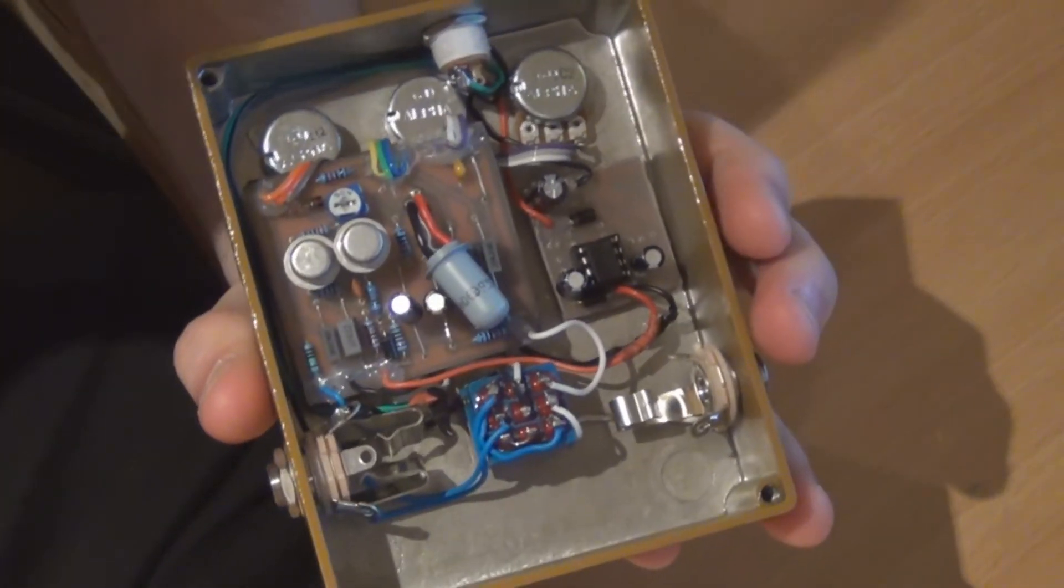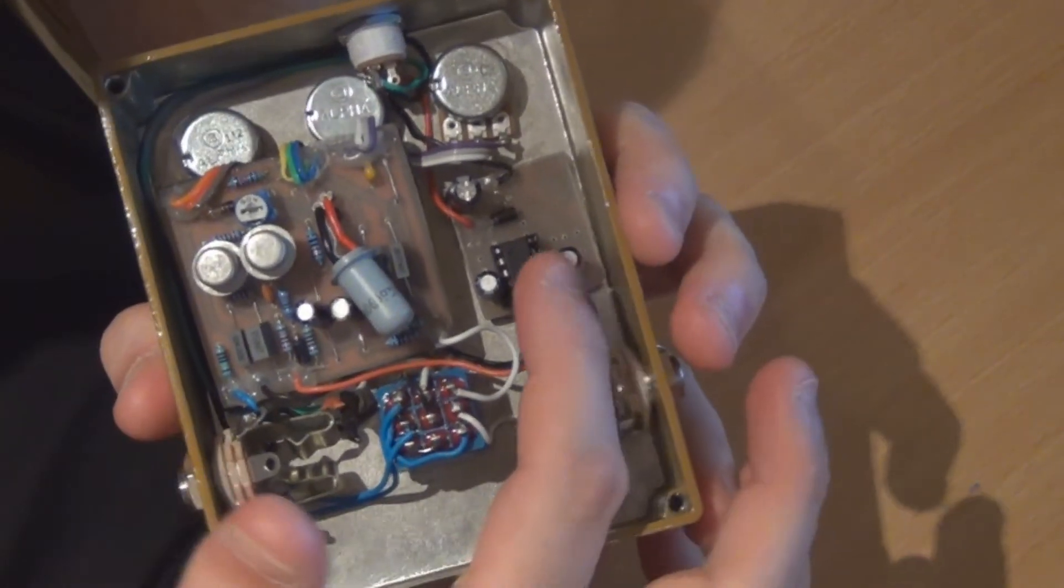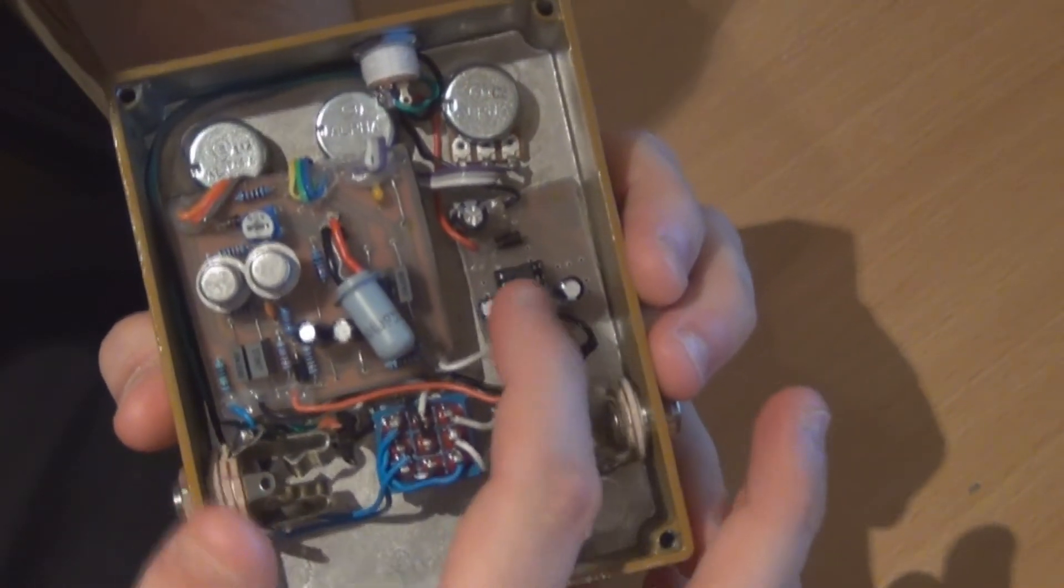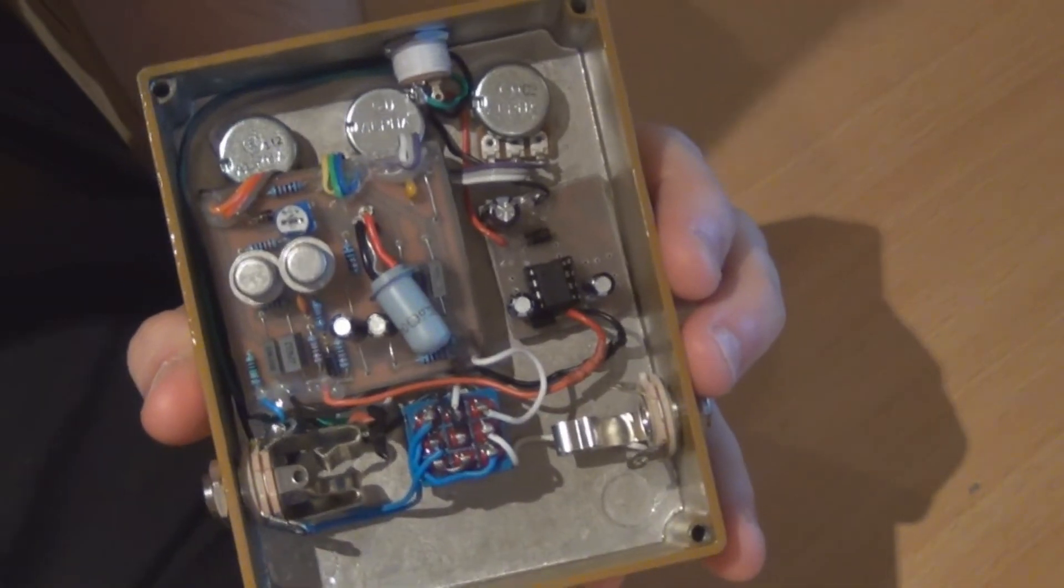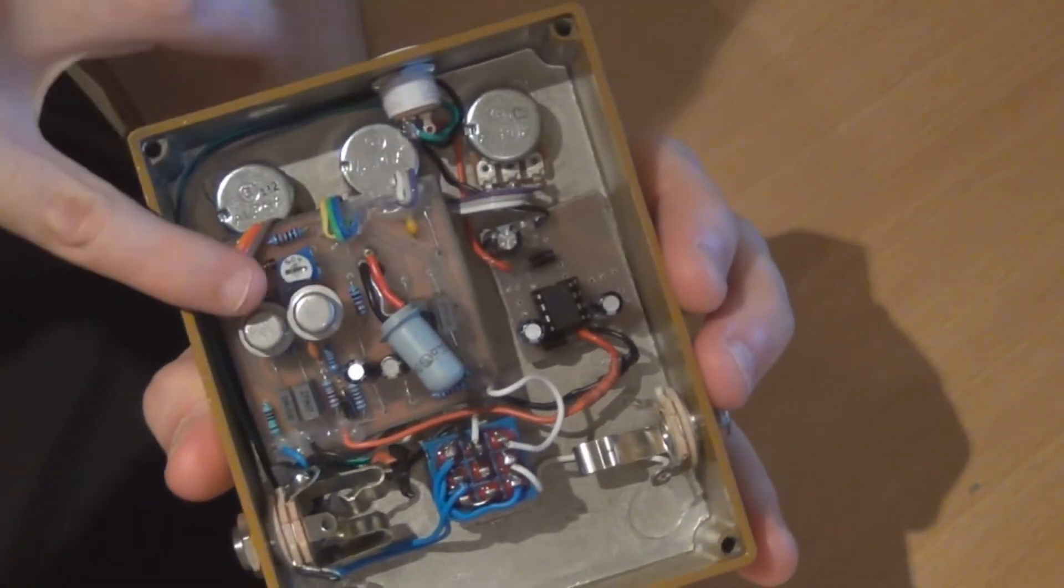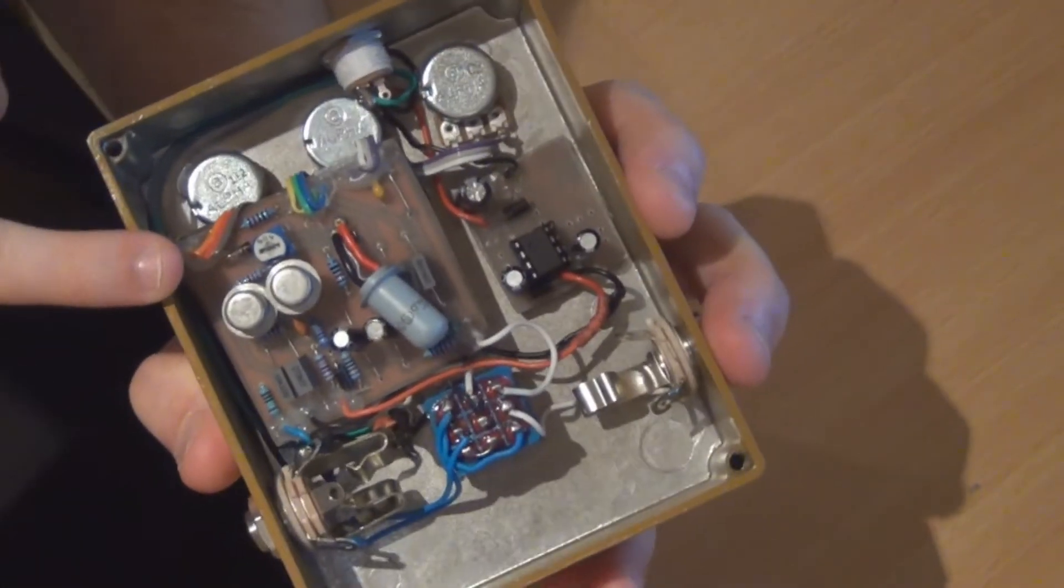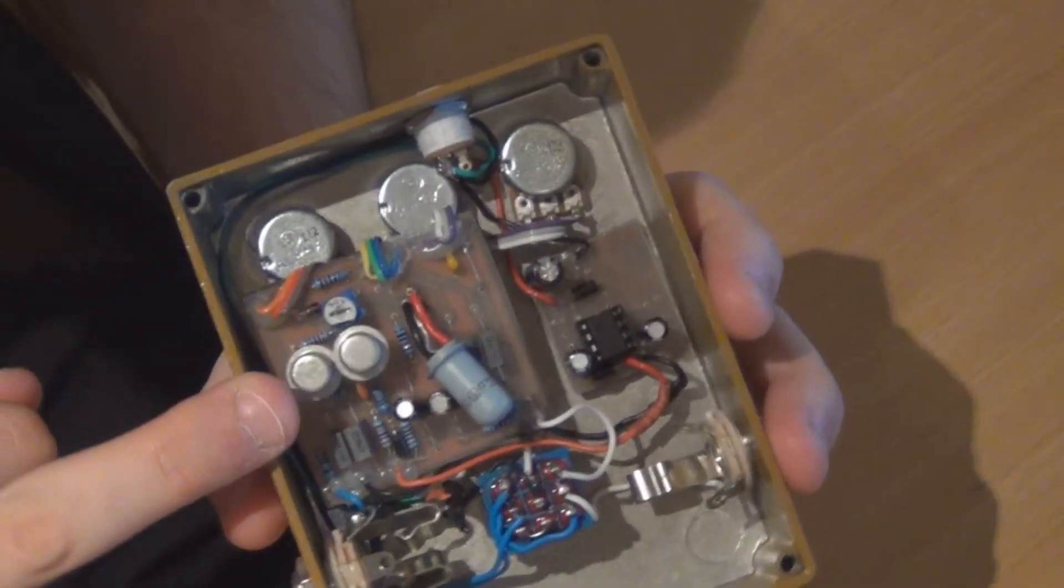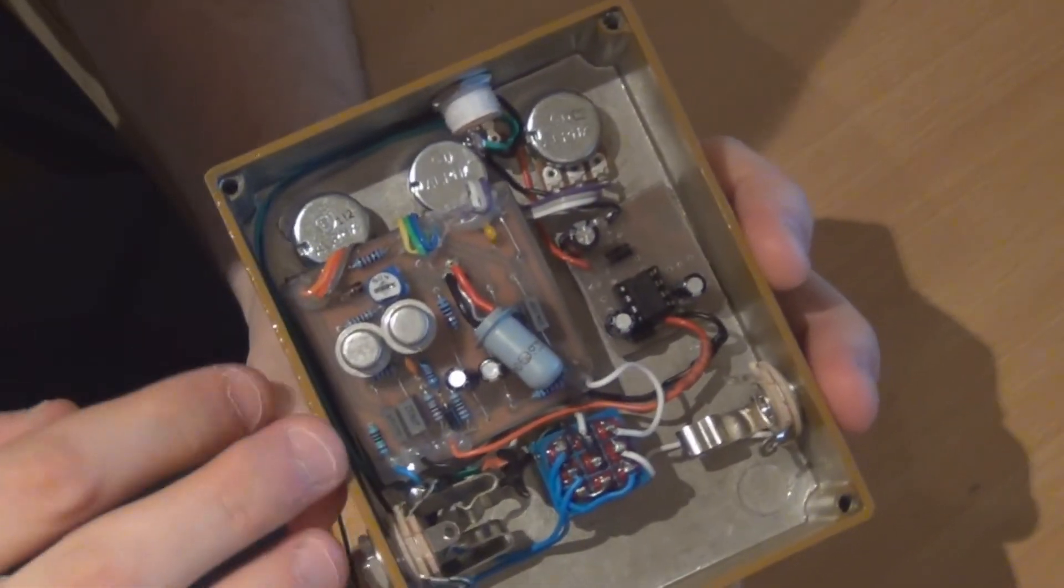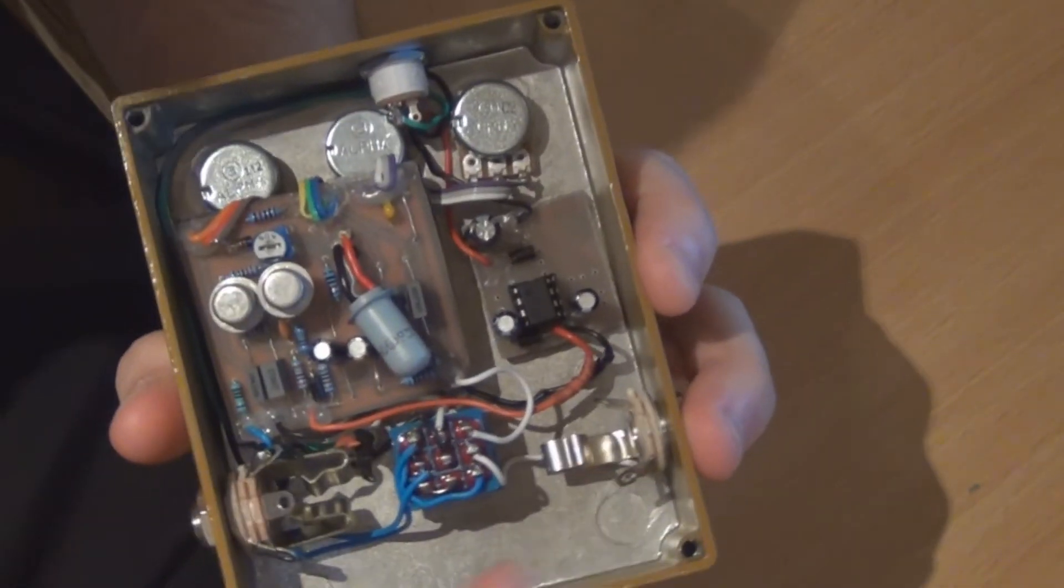There's not a huge amount to tell on the inside. Similar setup to the Buzz Around, got the MadBean Road Rage which is the charge pump that flips the power over on the side, and that goes into the Sola Bender. I explained that in another video so I'm not going to go over that again.